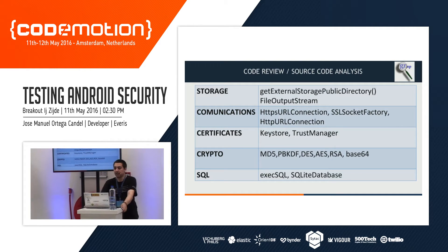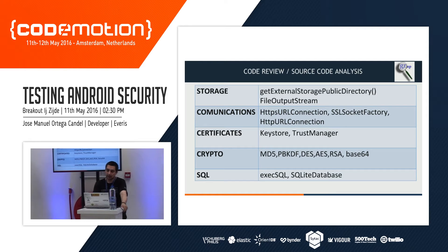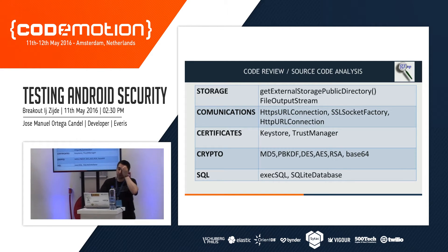The classic code review basically consists in finding specific keywords depending on what we are analyzing. For example, if we want to test storage, we can search for functions related to external storage or FileOutputStream. If we are testing communications, we can search for keywords related to HTTPS connections. For certificates, the same — and with crypto, if our application is using cryptographic algorithms, we can find keywords like MD5, RC4, and so on. The same applies with database calls.